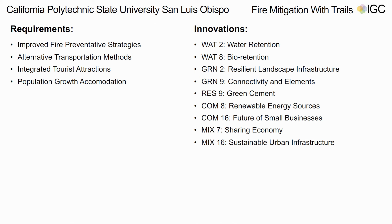The requirements that drove the goals and objectives for us were obviously fire preventative measures. We wanted to figure out how to provide alternative transportation routes for these people, integrate tourist attractions such as hiking and outdoor activities, and accommodate a modest amount of population growth. One of the main innovations we focused on was resilient landscape infrastructure, which can vary from fire-safe materials for structures to fire bunkers strategically placed along the trail, with the main goal being fire safety and fire preventative strategies.